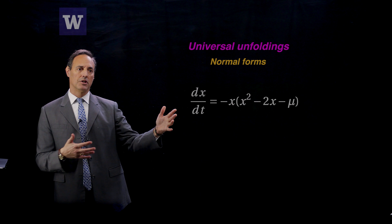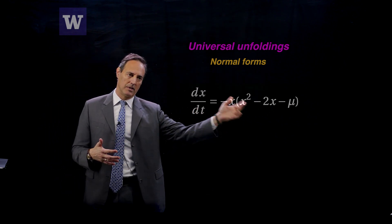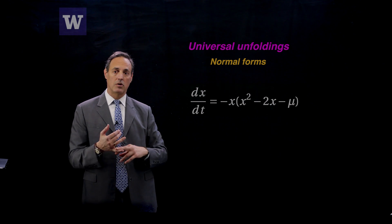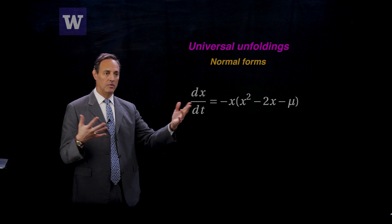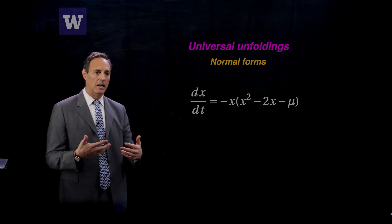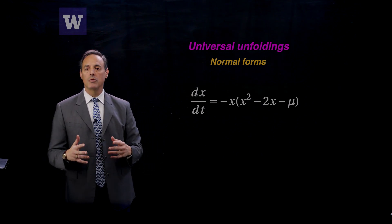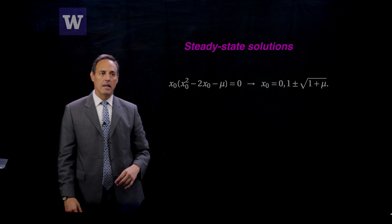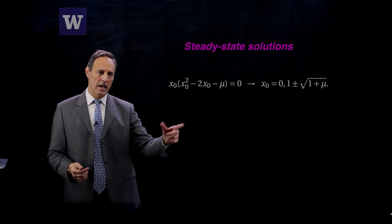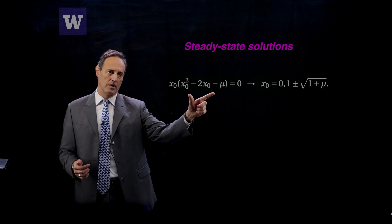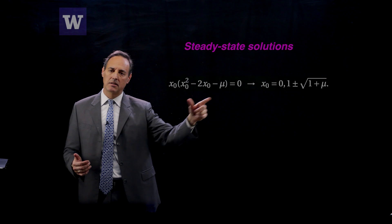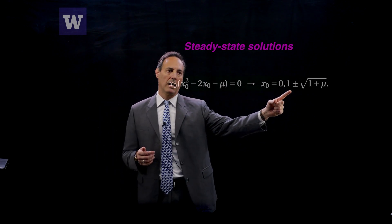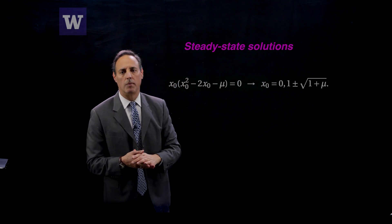Here's an example differential equation: dx/dt = x(x² - 2x - μ). This equation is not in the form of any of those I showed you — the transcritical, the Hopf, the pitchfork. This is some new differential equation, and generically we'll consider it in its own right. The steady-state solutions are where dx/dt = 0, which gives x₀(x₀² - 2x₀ - μ) = 0. What I find is three branches of solutions: x₀ = 0, x₀ = 1 + √(1+μ), and x₀ = 1 - √(1+μ).